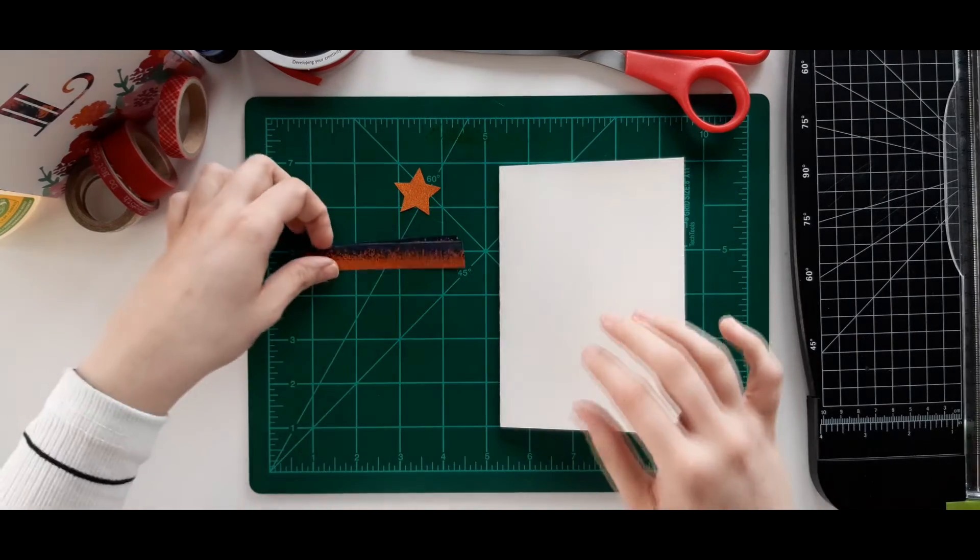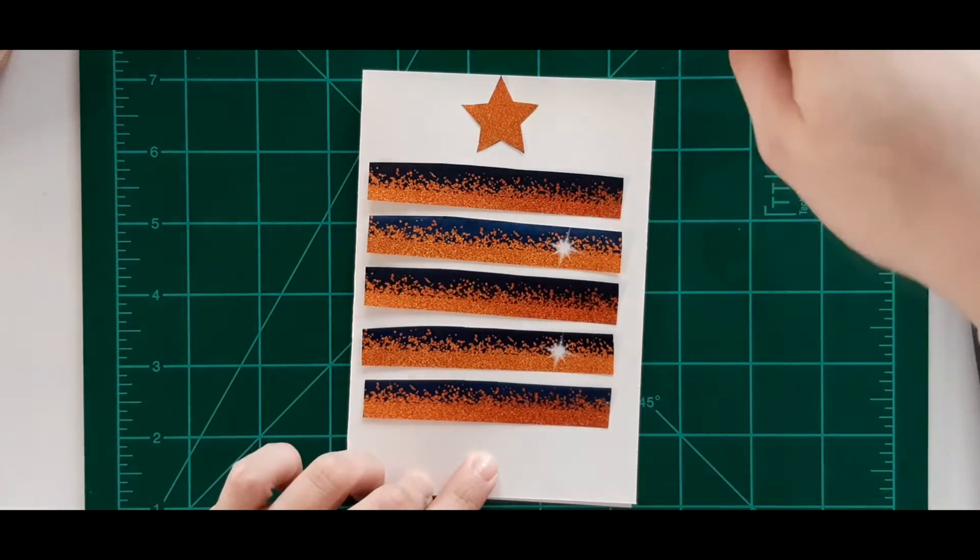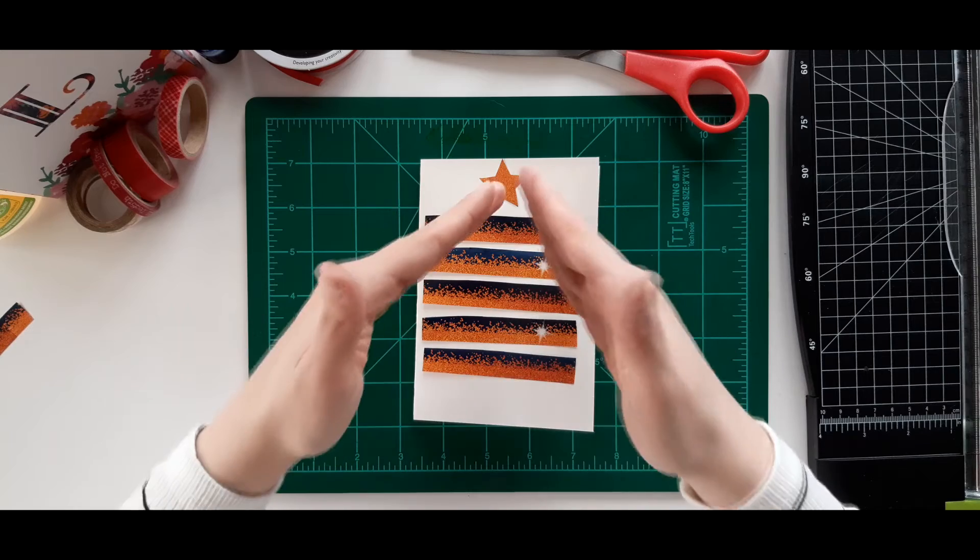What we're gonna do next is I'm gonna lay them out. From bottom to top I'm gonna glue them and each time I'm gonna cut them a tiny piece smaller, so in the end it's gonna look like a Christmas tree, believe me.